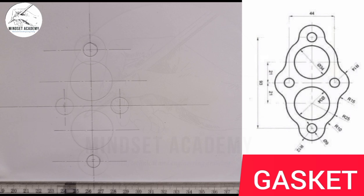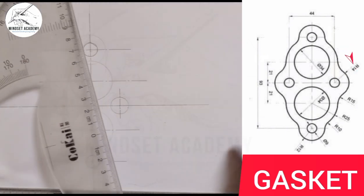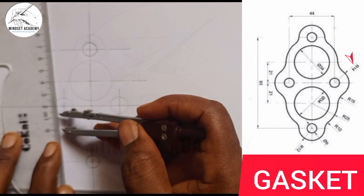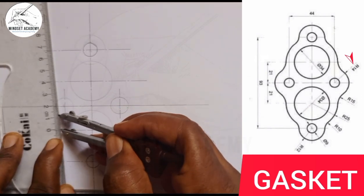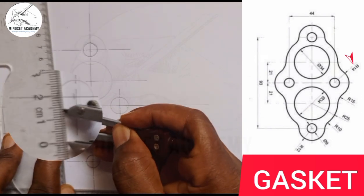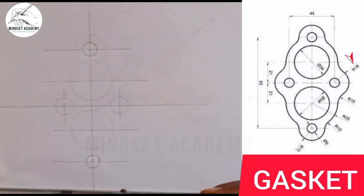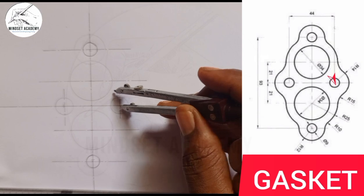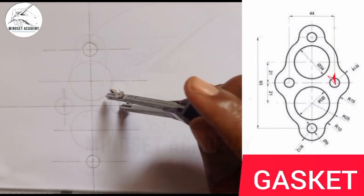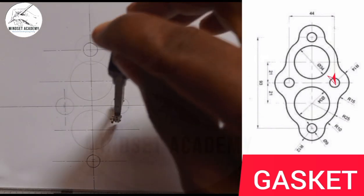We also have this arc here with a radius of 14. I'm going to measure 14 on my metal rule — from zero, this is 14 here. I'll place it at this point and draw a circle using a faint line first.